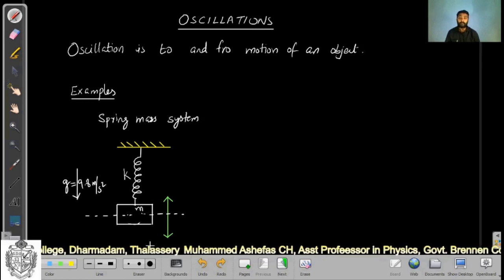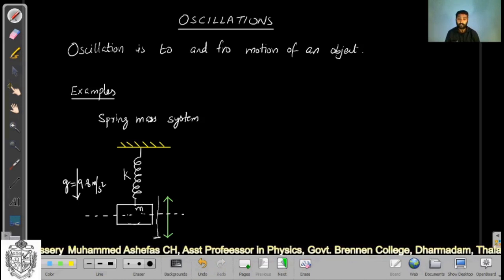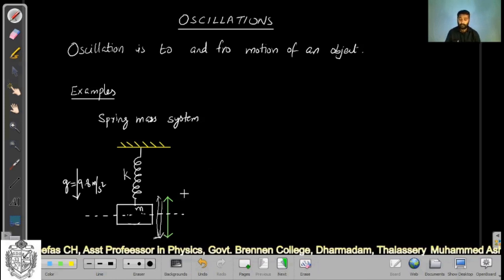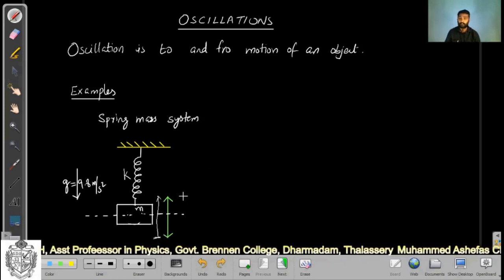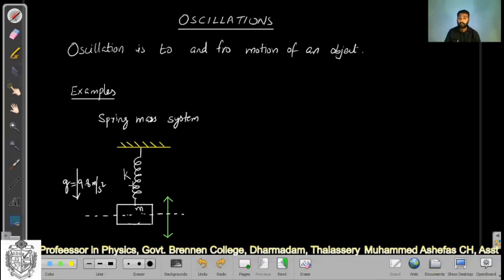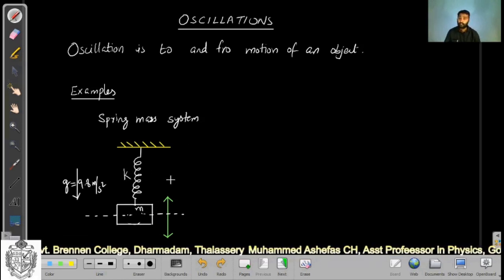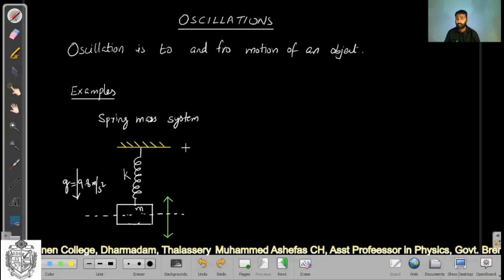The time required for one complete oscillation - suppose if the spring is starting from here, the time required to come back to the same position - that is called the time period of the oscillation. The time period will depend upon the mass of the system and the spring constant. This example is not very relevant to us.